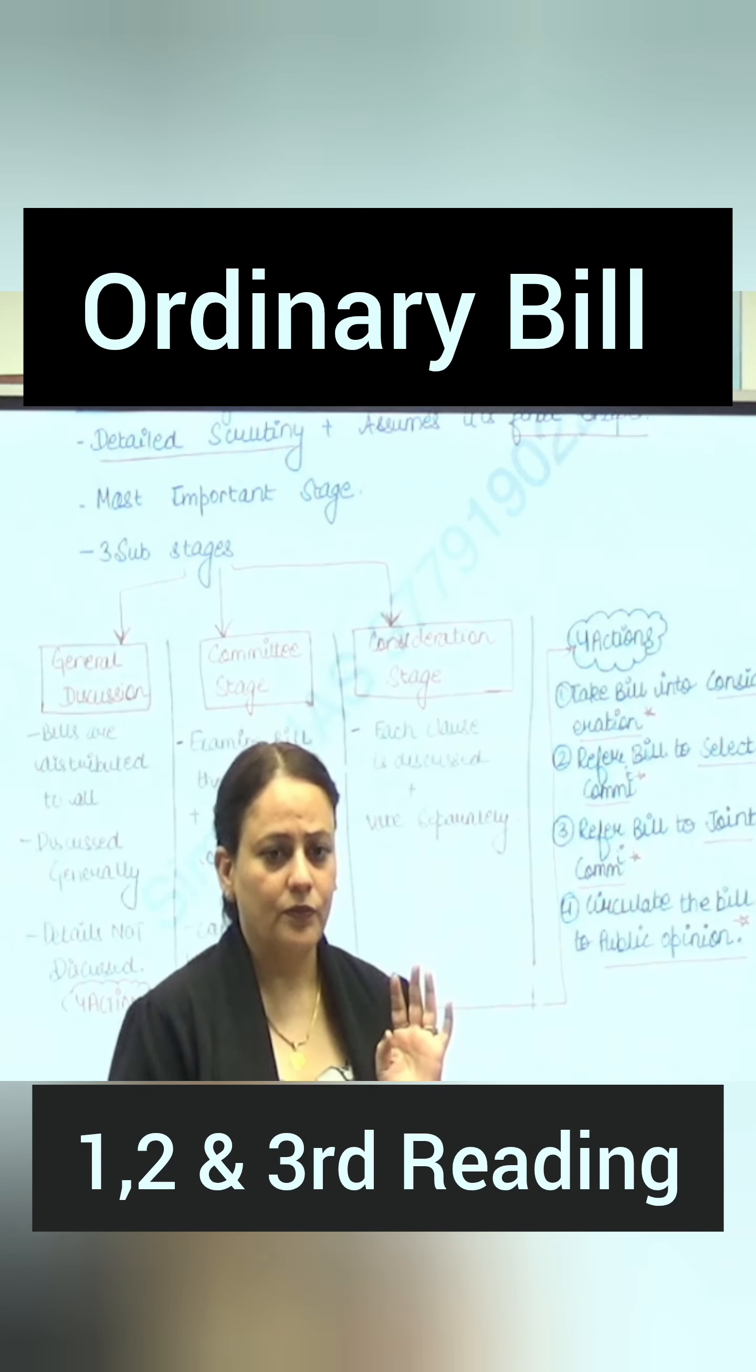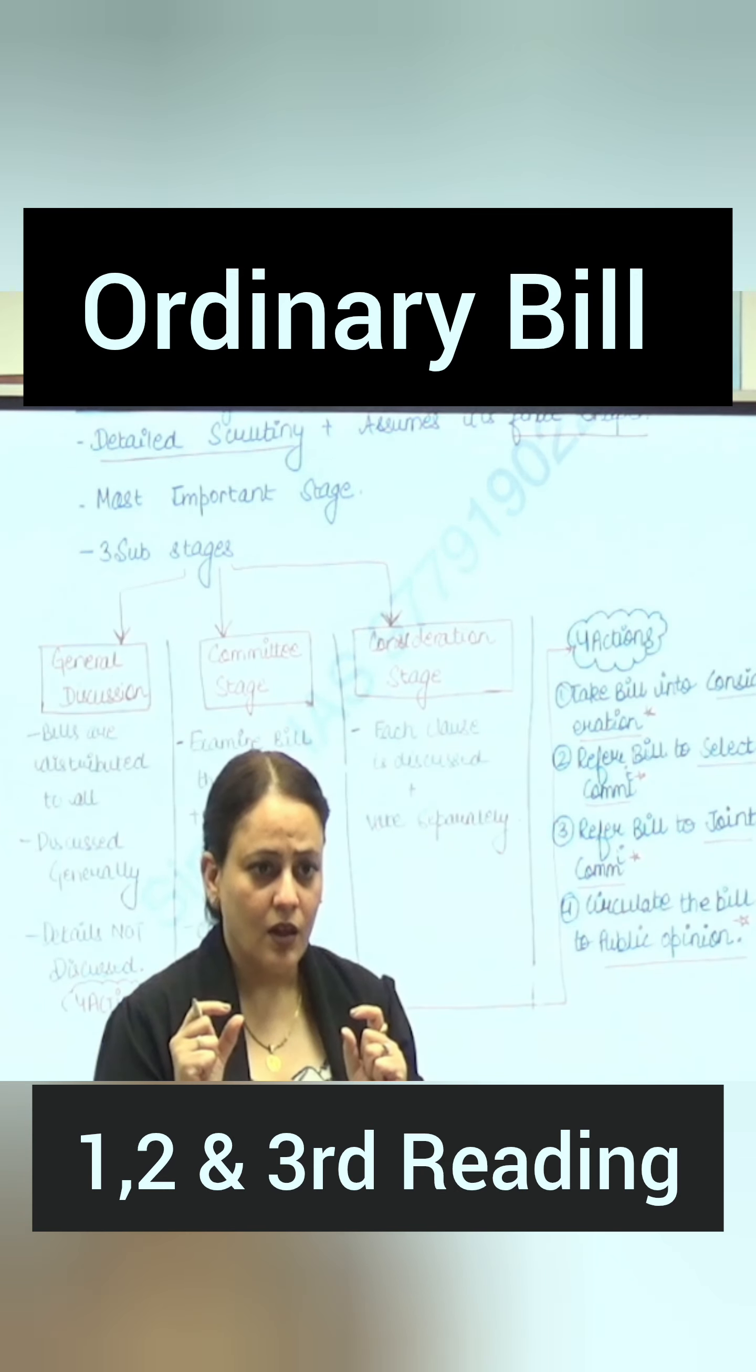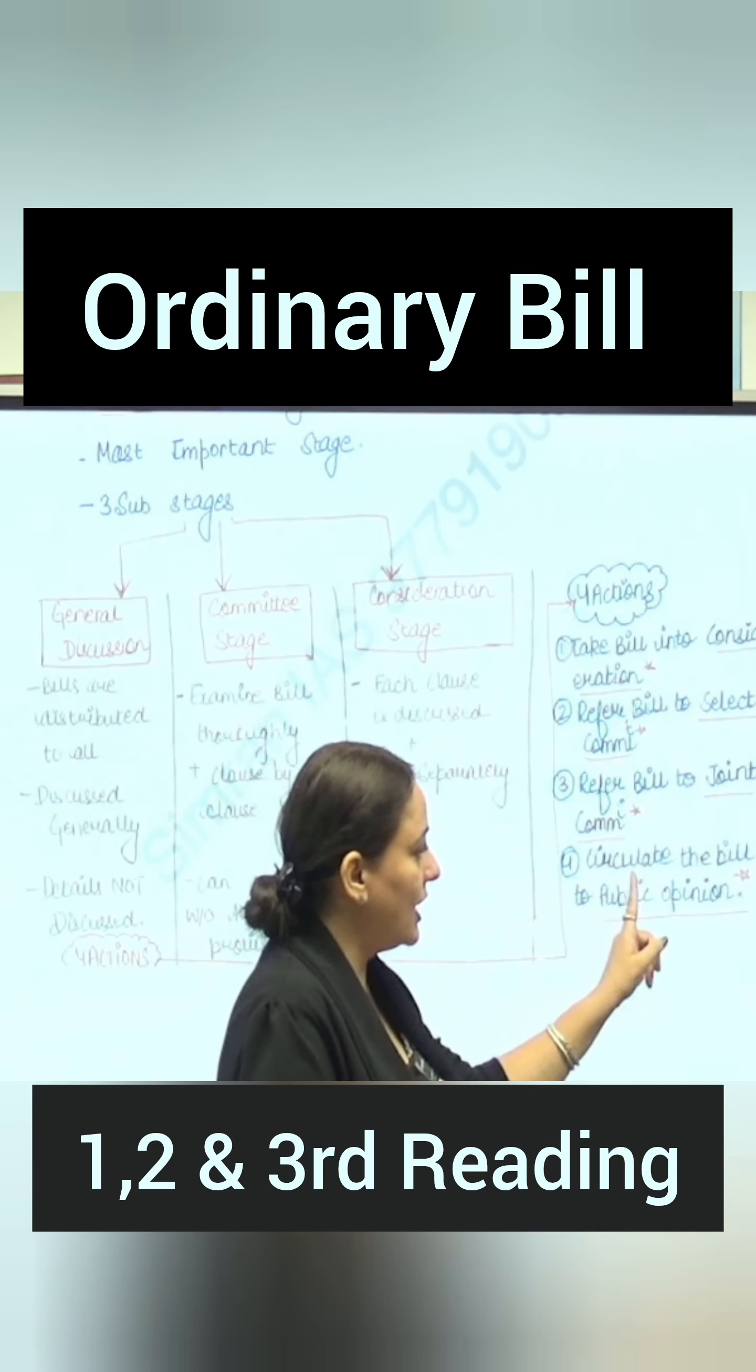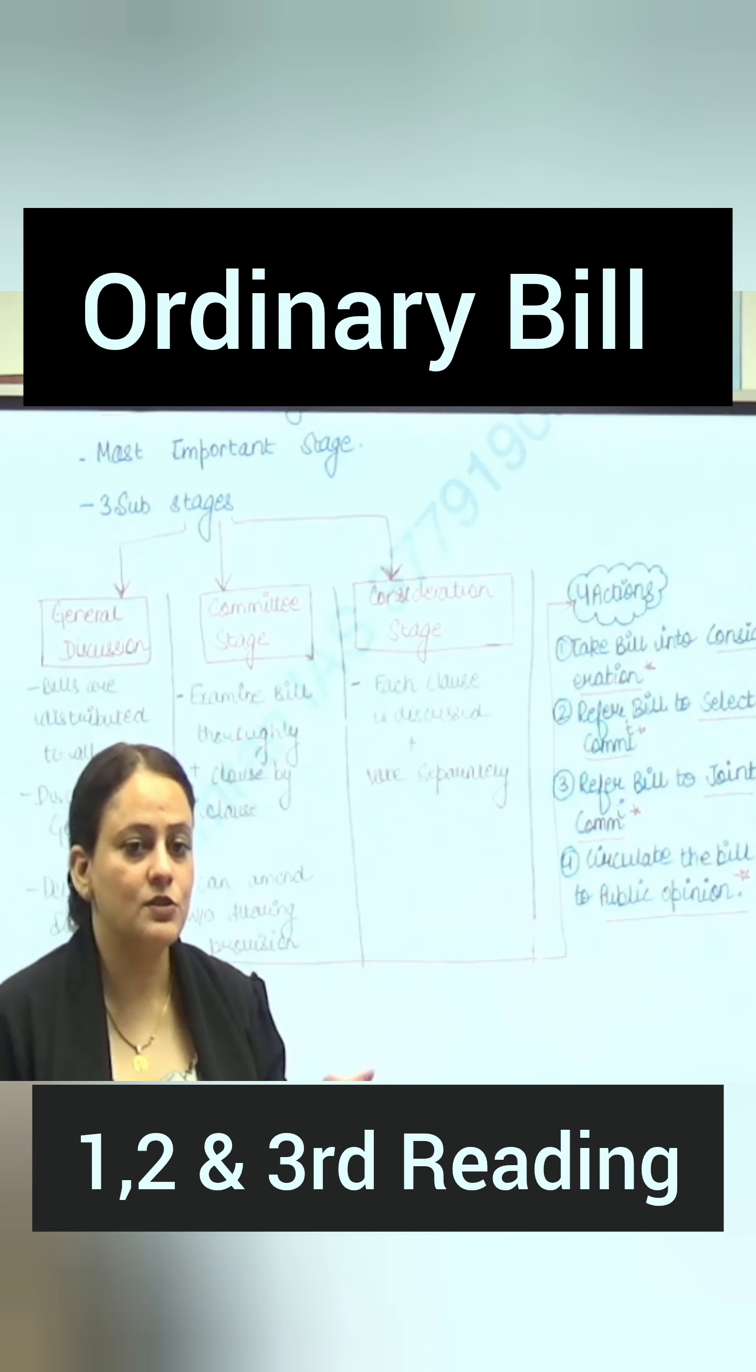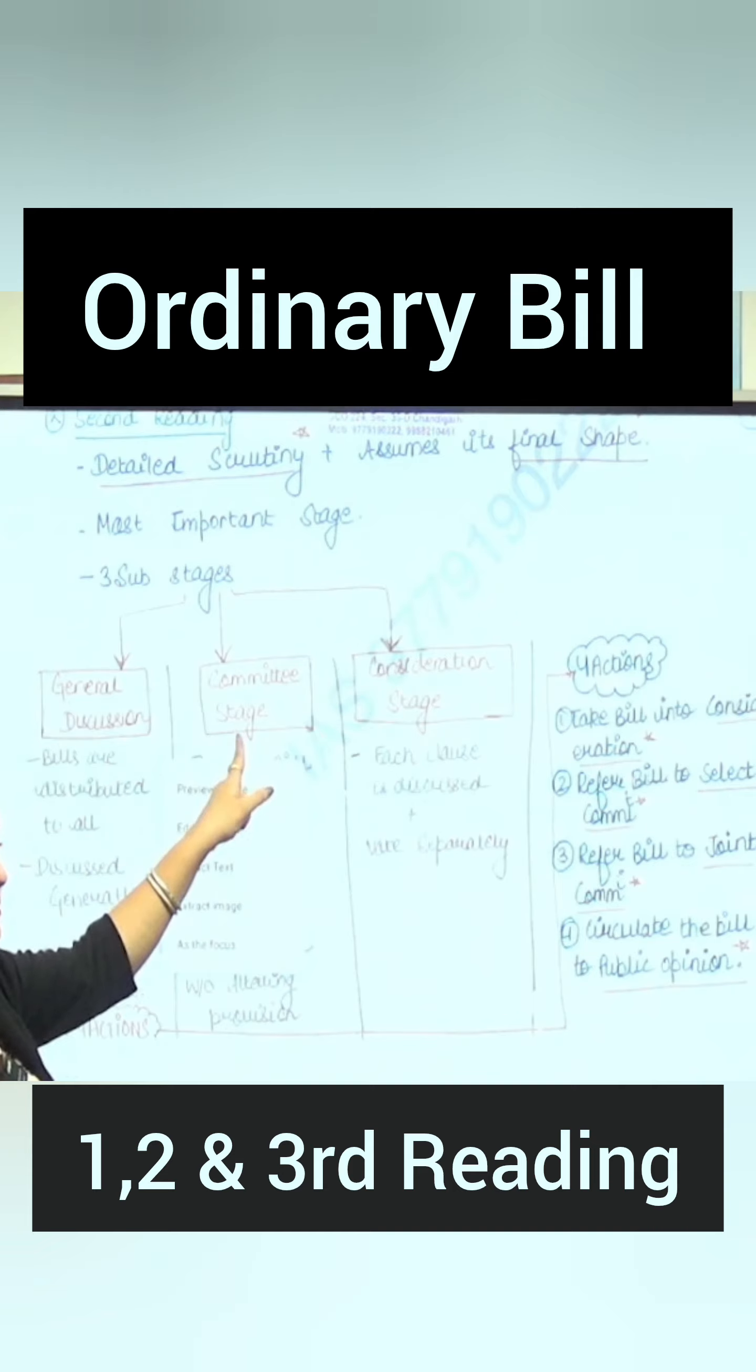There are four actions that we can do with that bill. What are the four actions? Take the bill into consideration. Second, refer it to the select committee. Third, refer it to the joint committee. And last one is the fourth thing that you should send public opinions. This article number 370 has been removed - you should have asked, not all of them but overall it was a general survey. So they also send public opinions.